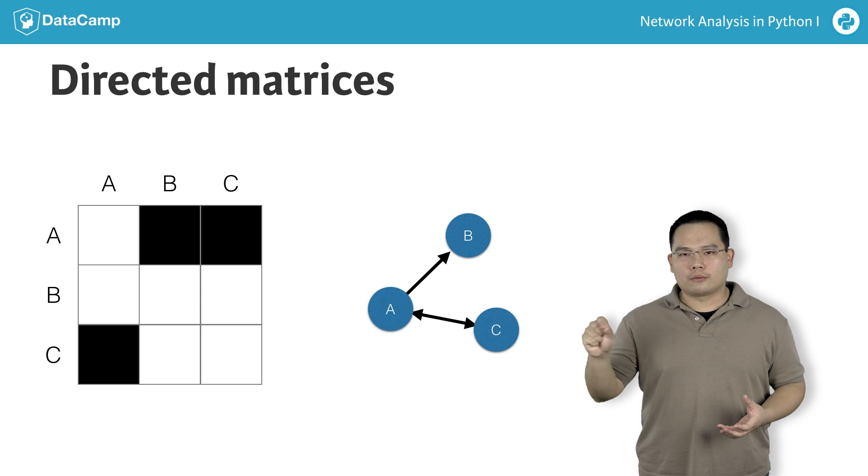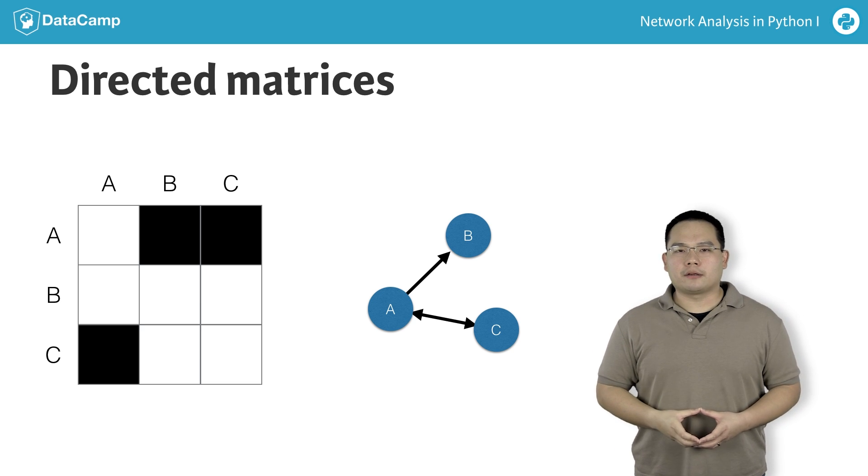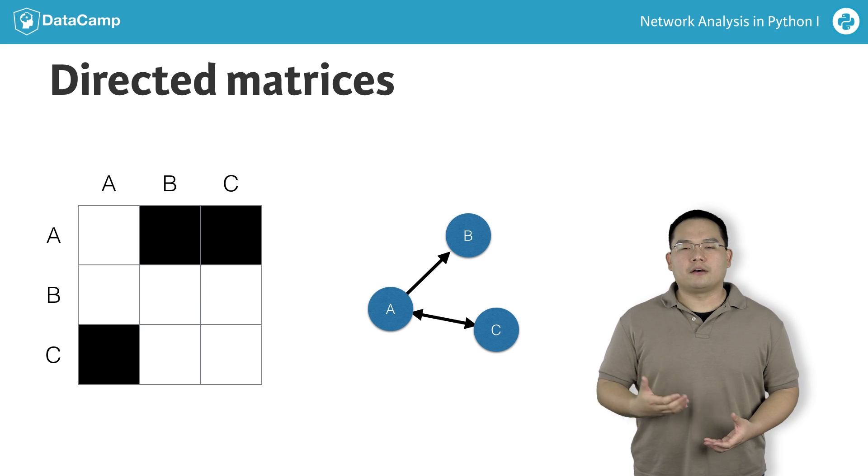If the nodes are ordered along the rows and columns, such that the neighbors are listed close to one another, then a matrix plot can be used to visualize clusters or communities of nodes.